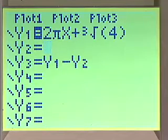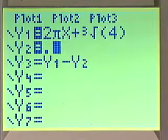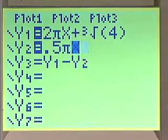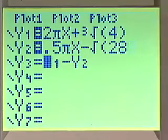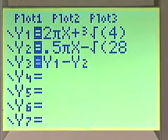Our equation 2 is 0.5πX minus the square root of 28, and what we're interested in now is Y1 minus Y2. That would be equal to zero.